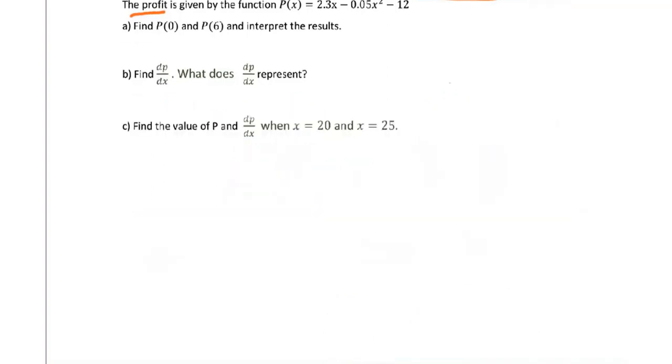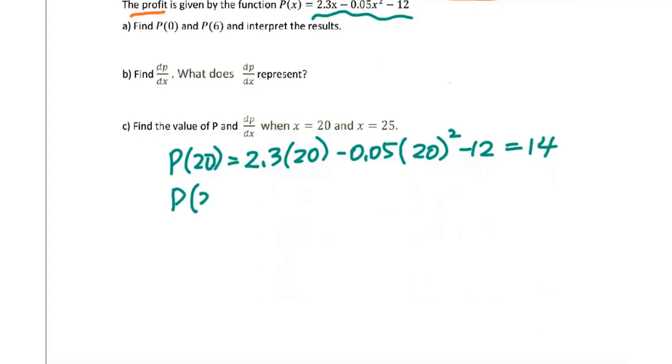Now let's go to part c: find the value of P and dP/dx when x equals 20 and x equals 25. We will get P(20), put 20 into the original function: 2.3 times 20 minus 0.05 times 20² minus 12 equals 14. P(25): you will get 2.3 times 25 minus 0.05 times 25² minus 12 equals 14.25.